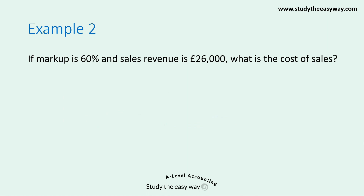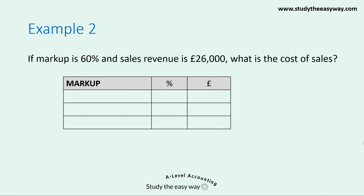This time we'll look at a markup question. If the markup is 60% and the sales revenue is £26,000, what is the value of cost of sales? We draw a table again, but notice that it's a markup question, and that affects the order we write down the figures. Remember with markup, our start point is cost of sales, which we deem to be 100. We add the gross profit markup of 60, giving us sales revenue represented as 100 plus 60, which is 160.